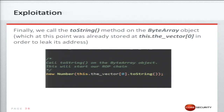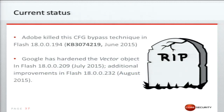Adobe killed this CFG bypass technique in Flash version 18.0.0.194, published in June this year. As a side note, Google hardened the vector objects in July this year with additional improvements in August. If you're looking to obtain read and write primitives, you may need to find another way because the vector technique will probably not work anymore.